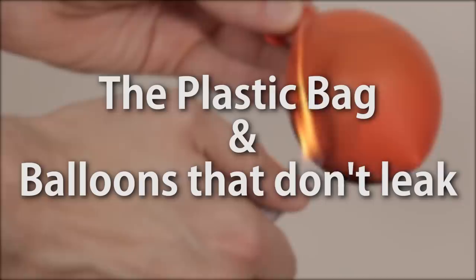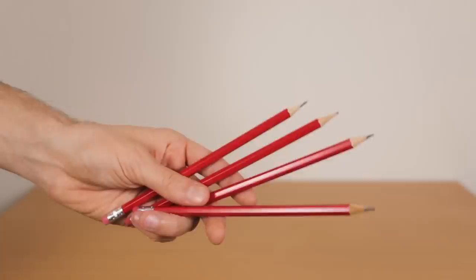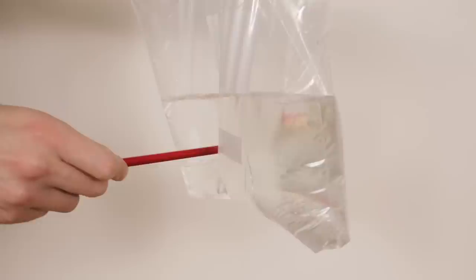Number six, the plastic bag and balloons that don't leak. I think it's time that we moved on from glasses. For these next two tricks, I will be using plastic and rubber with water. The first one requires a sealable plastic bag, some water, and sharpened pencils. Fill the bag halfway with water, and then seal it well. Poke a pencil into it, and all the way through the other side. Feel free to add more pencils if you like. You expect it to burst, right? But it didn't.